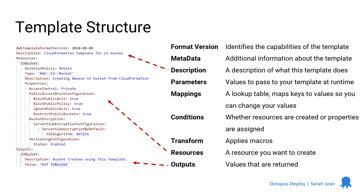Especially if you go out onto the internet and pull up some samples and have a look at them, you won't be able to understand what you're reading and why there are certain functions or bits inside your template. So the first line of your template will be the format version. This defines the capabilities that your template will have. The current version of the AWS CloudFormation format version is 2010-09-09. You'll see all of the templates out there hopefully with that format version — that's the only valid version you can use.